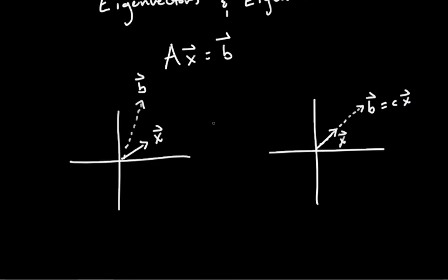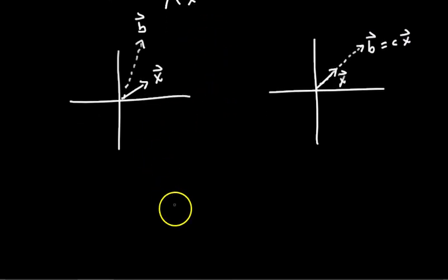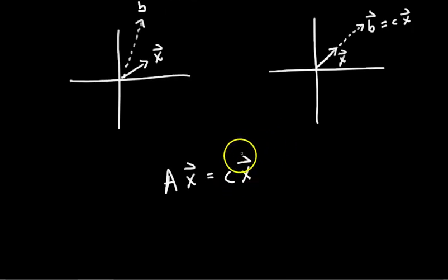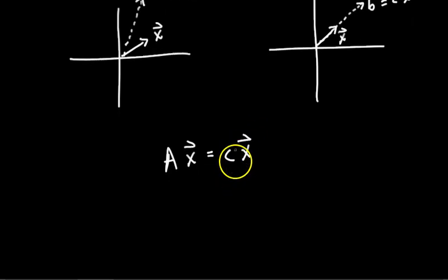So let's rewrite this matrix equation AX equals B. In the case where X is an eigenvector, meaning a vector that when it gets transformed by A just becomes a scalar multiple of itself, when X is an eigenvector, A times X equals C times X.